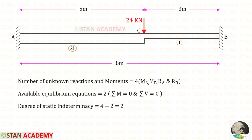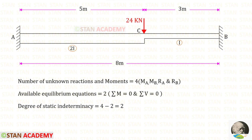Now we are going to find the degree of static indeterminacy. In this beam, the number of unknown reactions and moments are 4. The available equilibrium equations are 2. The degree of static indeterminacy will be 4 minus 2, which gives us 2.